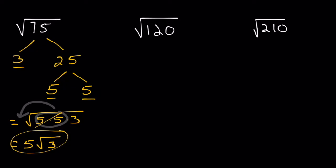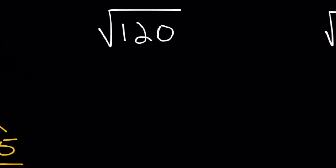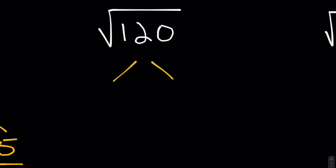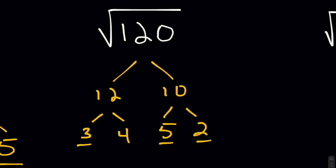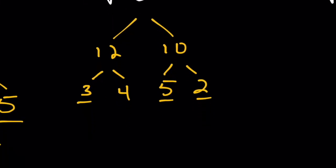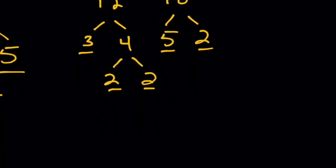Not too bad. Let's try the next one. To simplify the square root of 120, let's think of two numbers that multiply to 120. How about 12 and 10? 12 breaks down into 3 times 4 — remember, 3 is prime. 10 breaks down into 5 times 2, both of which are prime as well. 4 can be broken down a little bit more into 2 times 2, again both of which are prime, so we are done with our factor tree.